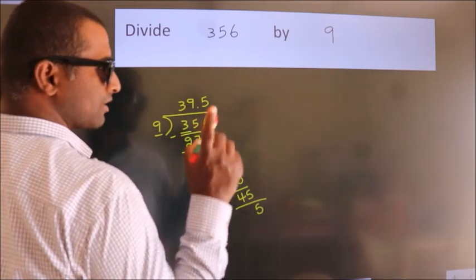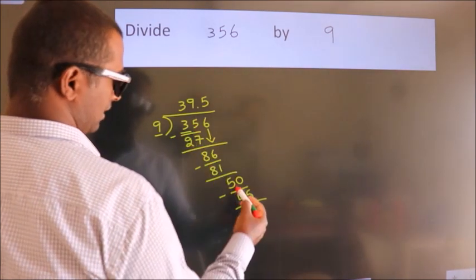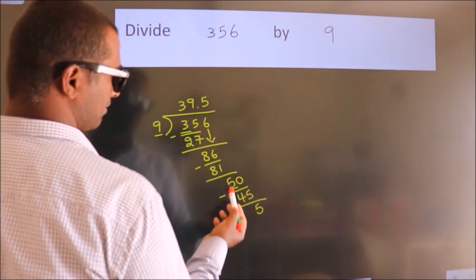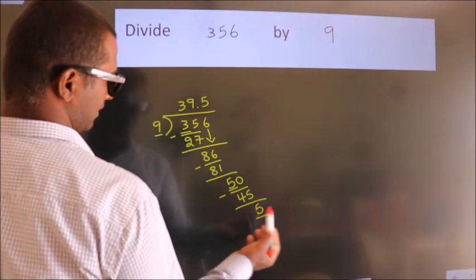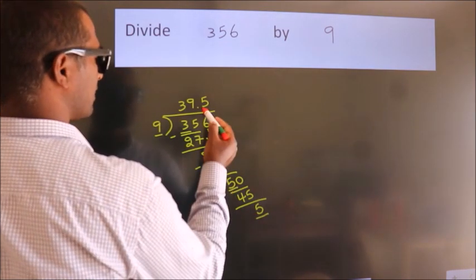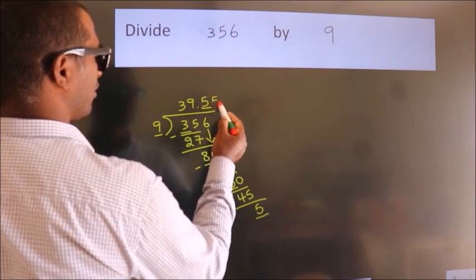Now you observe. Here we had 5, and we got 5 again. That means this number keeps on repeating.